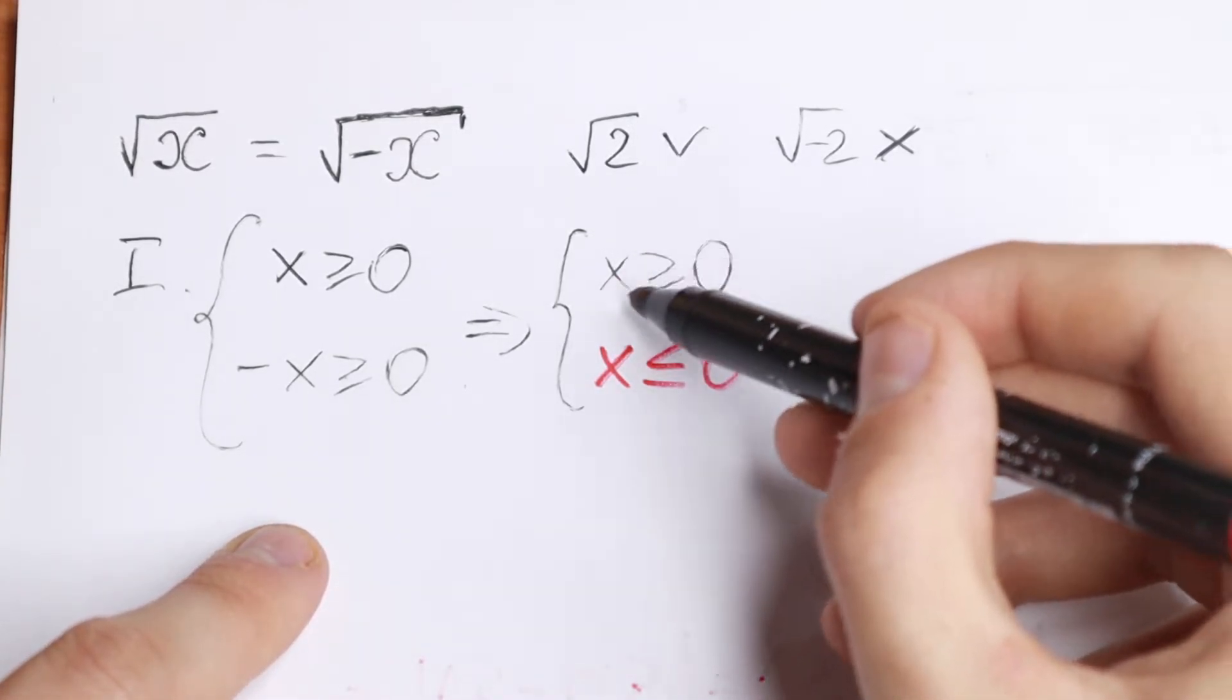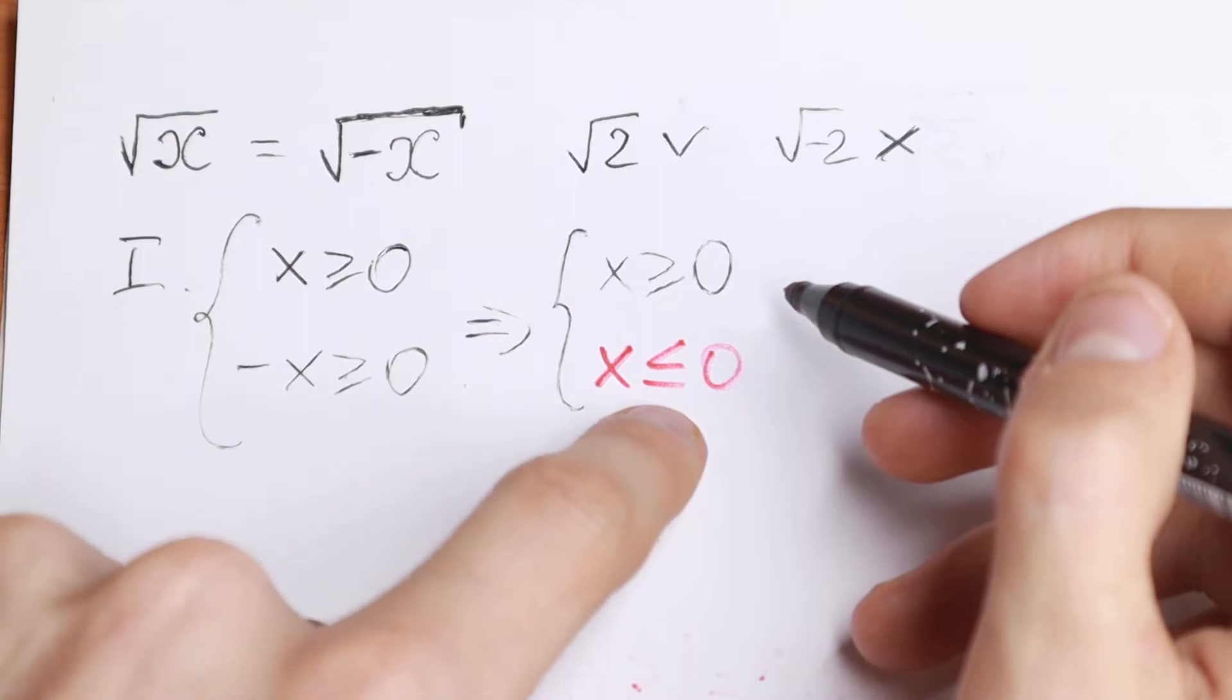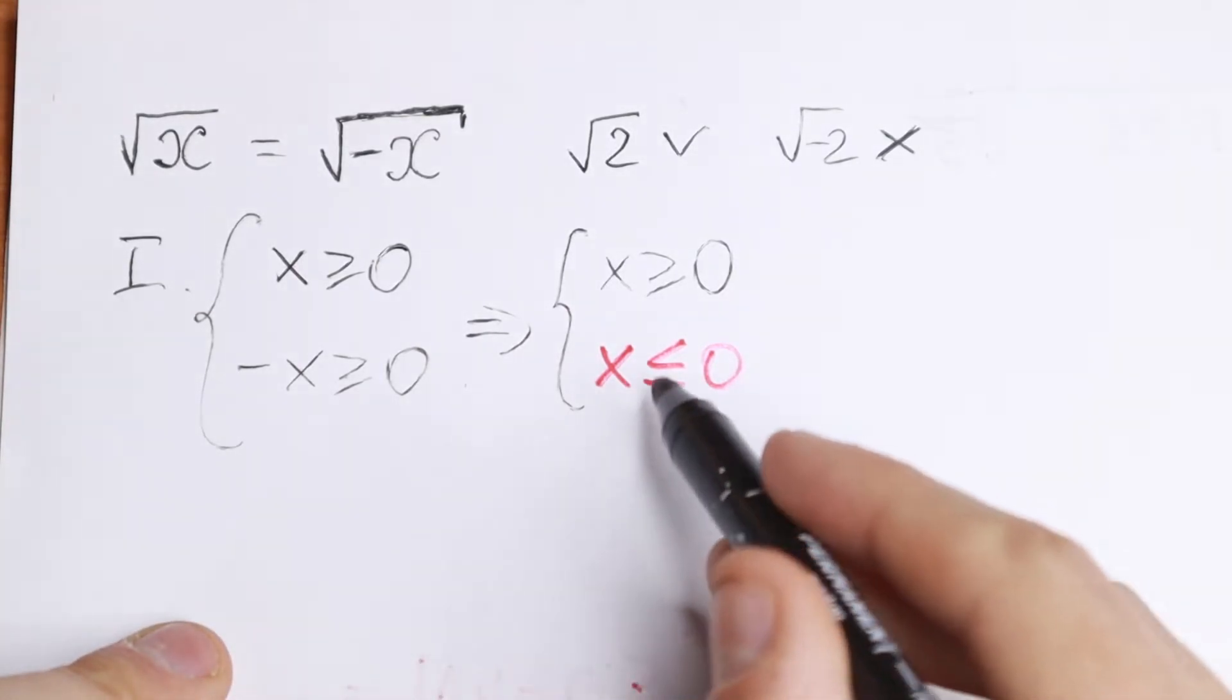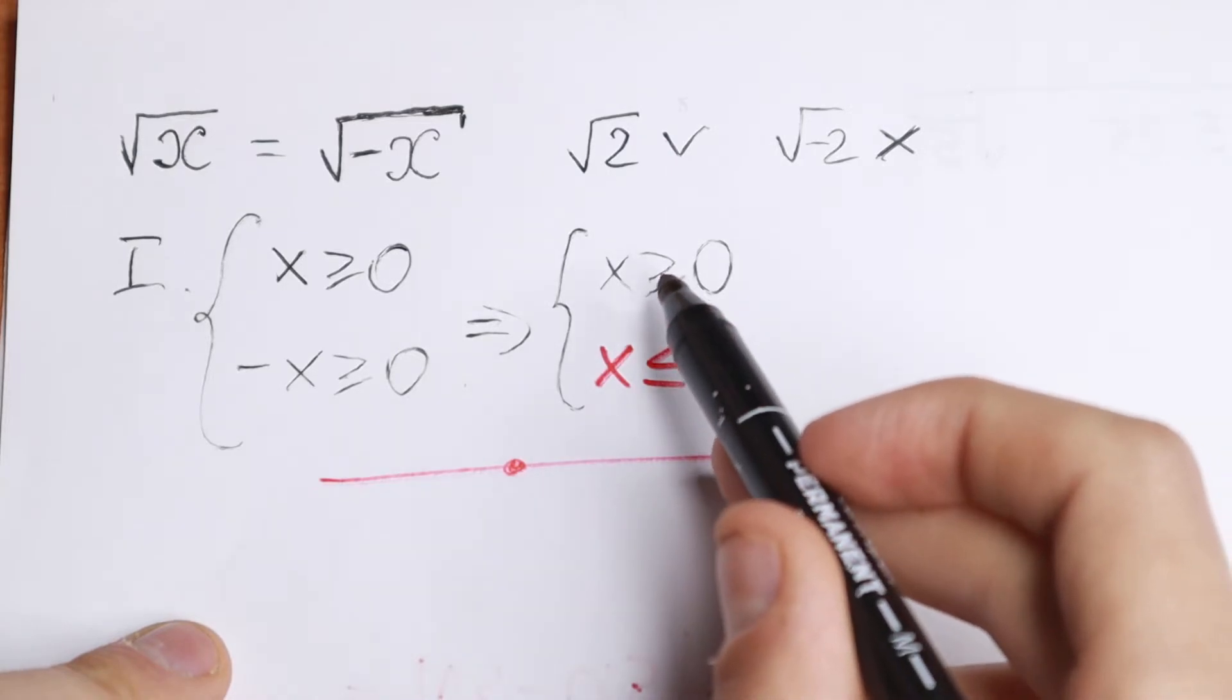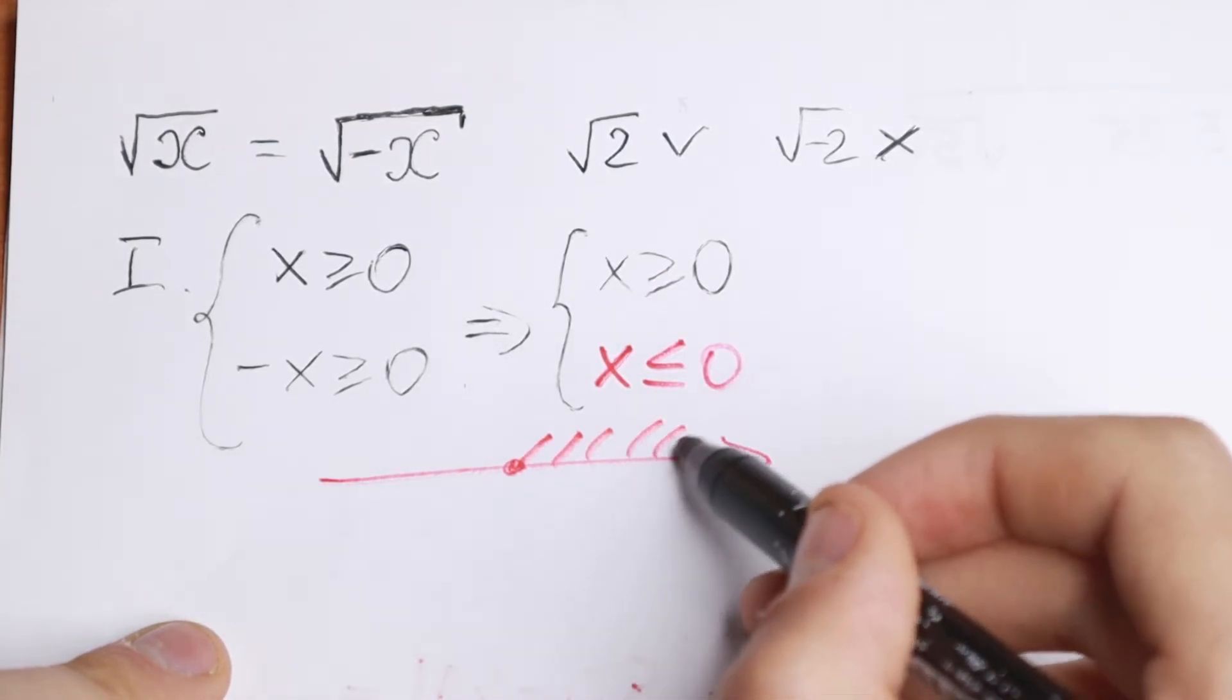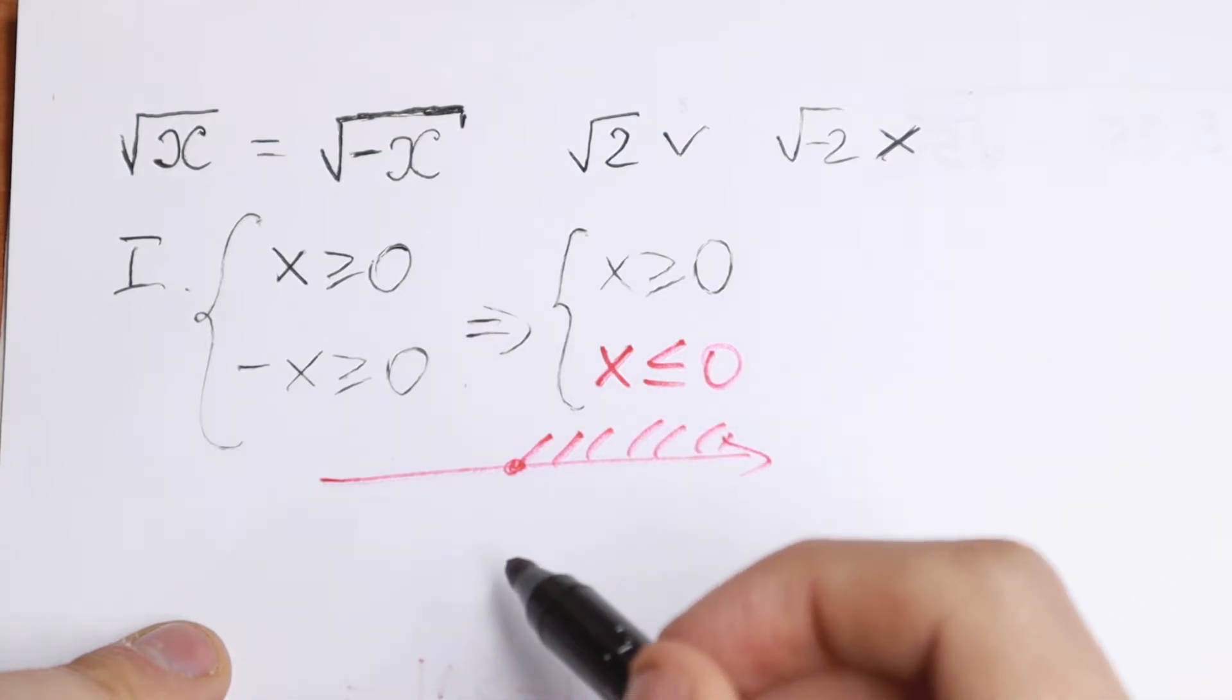So we have x greater than or equal to zero, and x less than or equal to zero. If we put this on a number line, x is greater than or equal to zero on the right, and x is less than or equal to zero on the left.